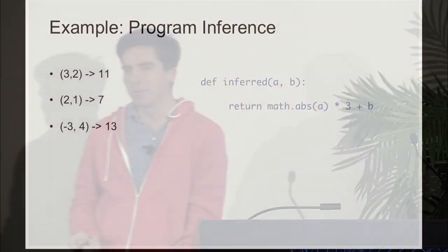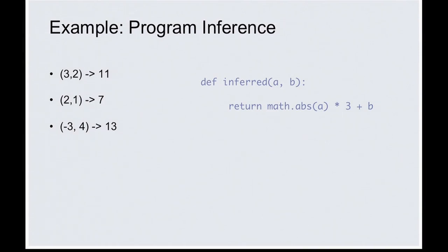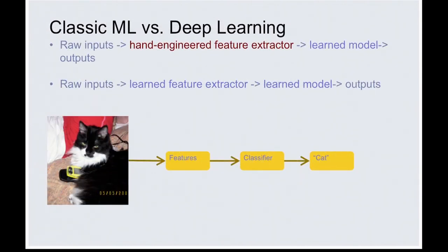One application you don't see very often — that used to be fashionable in old-school AI and is getting more attention now — is program inference. Given a set of input-output pairs, write the program that produces them. We ask human programmers to do this all the time, but it's completely ill-posed. I could write 'if it's three and two, return eleven; if it's two and one, return seven' just as easily as a nice general expression. We have strong priors that if you're asking me to do this, I should write a program that's general and concise, but it's hard to say exactly what we mean by that.